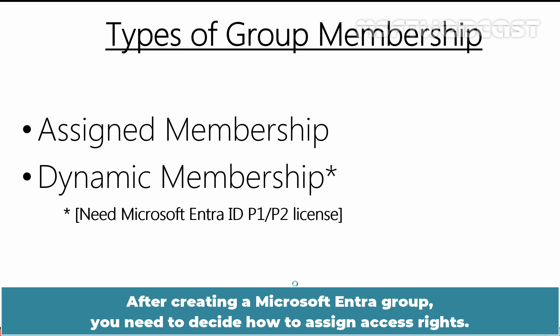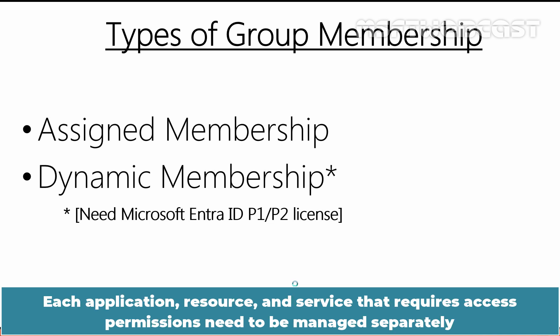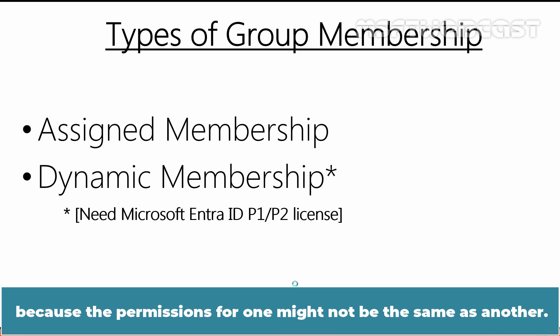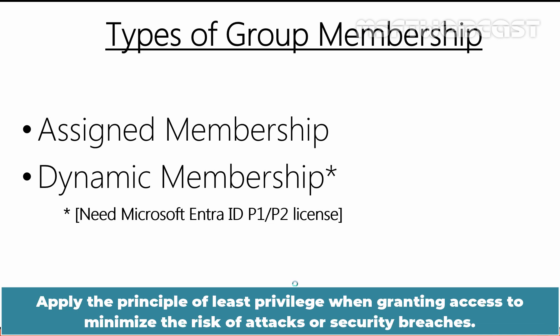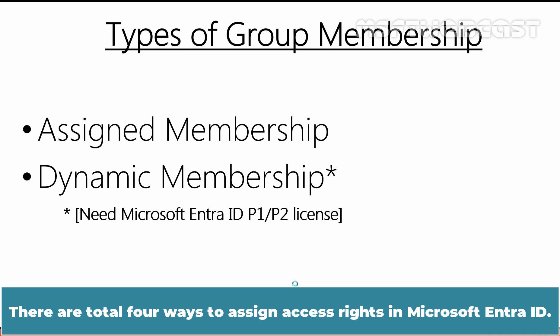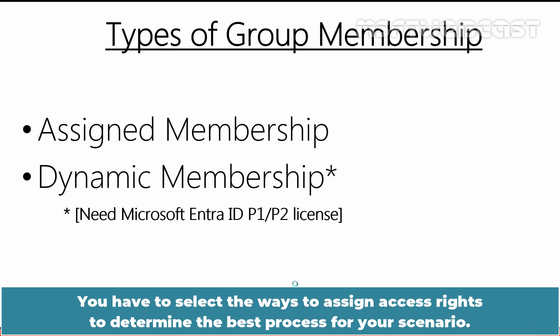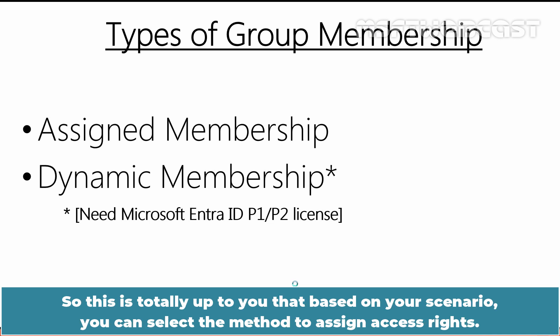After creating a Microsoft Entra group, you need to decide how to assign access rights. Each application, resource, and service that requires access permissions needs to be managed separately, because the permissions for one might not be the same as another. Apply the principle of least privilege when granting access to minimize the risk of attacks or security breaches. There are a total of 4 ways to assign access rights in Microsoft Entra ID, and you select the method based on your scenario.